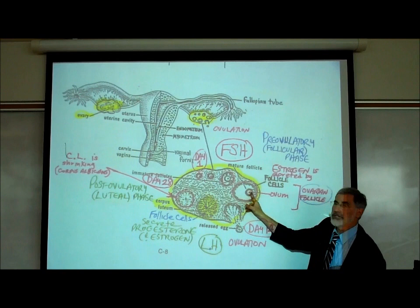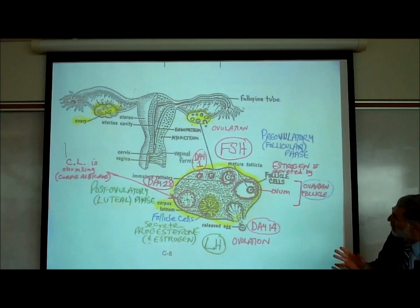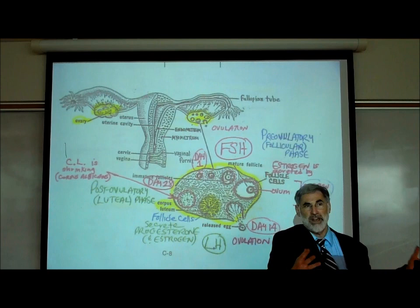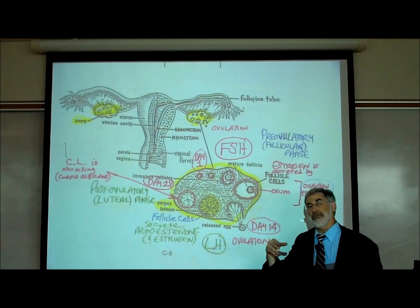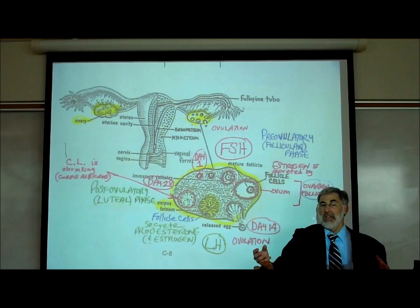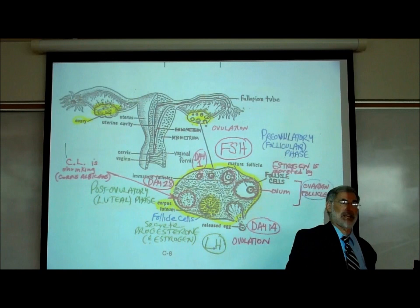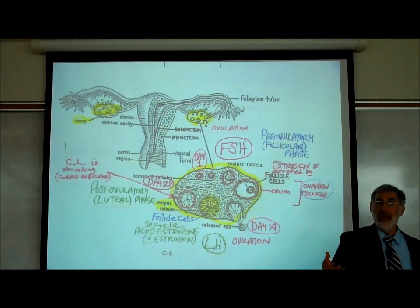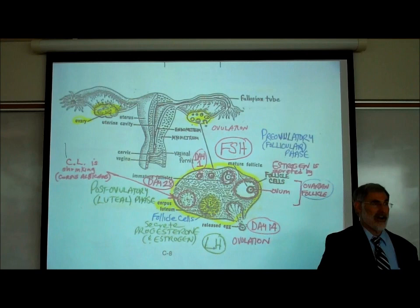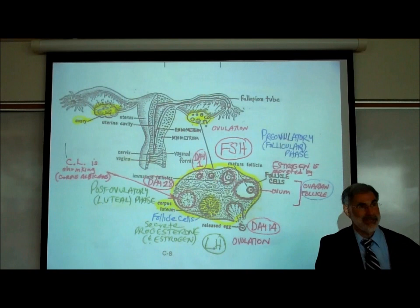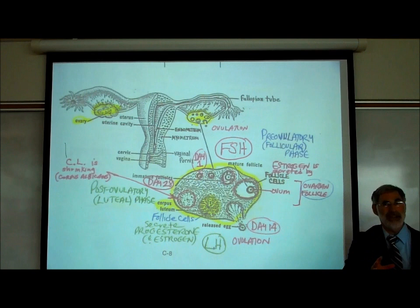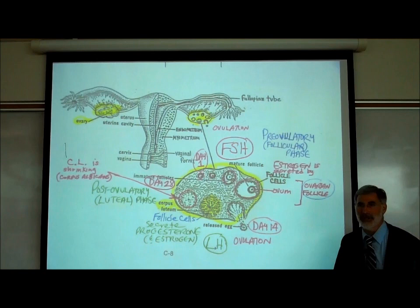We believe the ovaries alternate — one month FSH causes a follicle to develop in the right ovary, the next month in the left. Could an ovarian follicle develop in both ovaries simultaneously? It could. If both ovaries ovulate around the same time and a woman has intercourse, she can have twins — fraternal twins, two separate eggs fertilized by two separate sperm, possibly different genders. But most women usually ovulate one egg at a time.